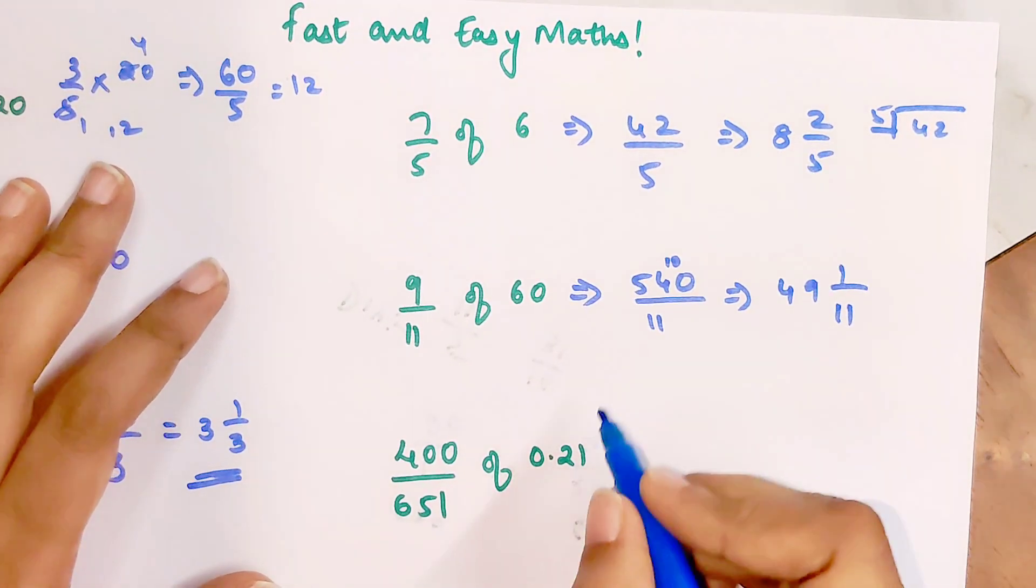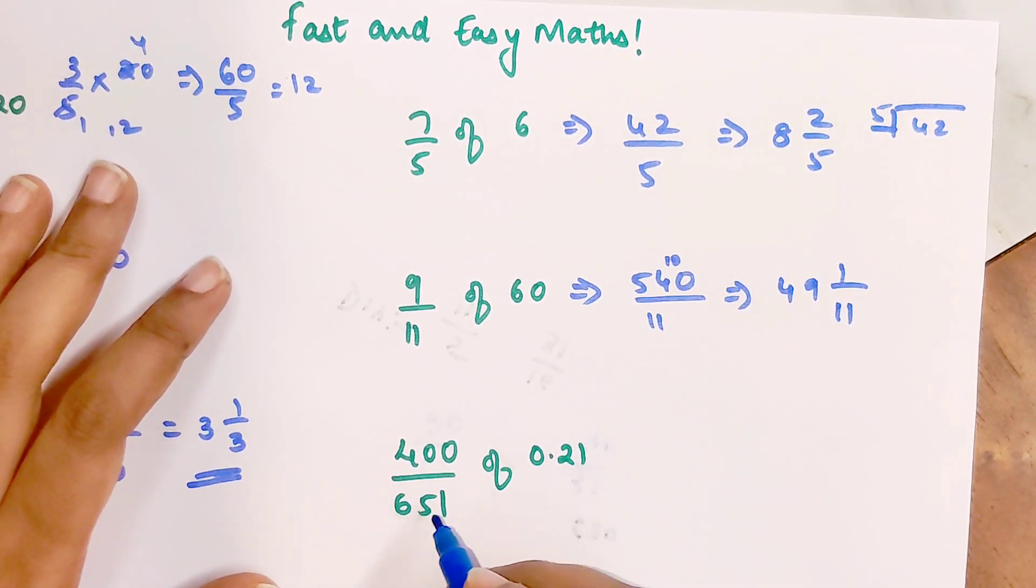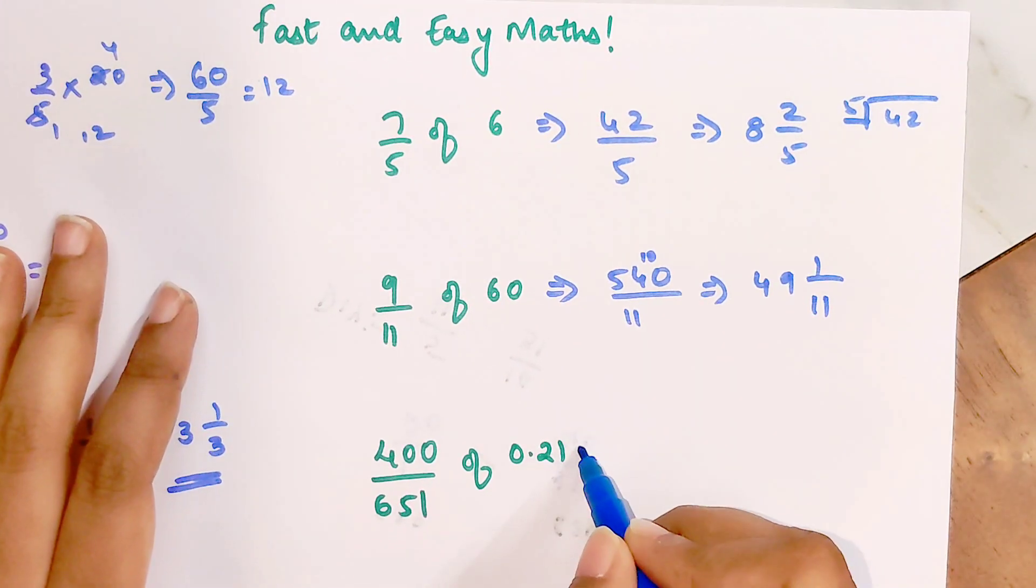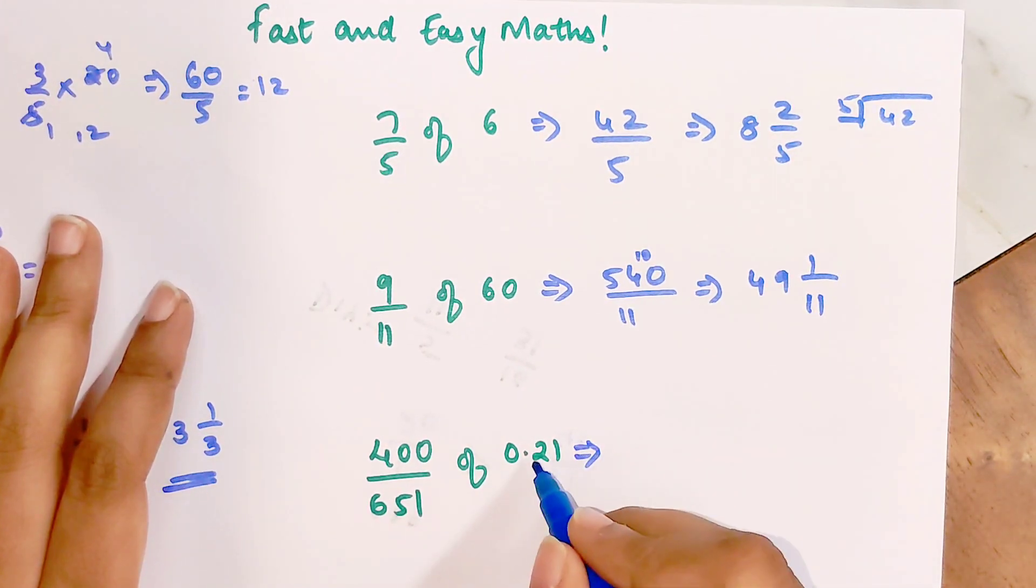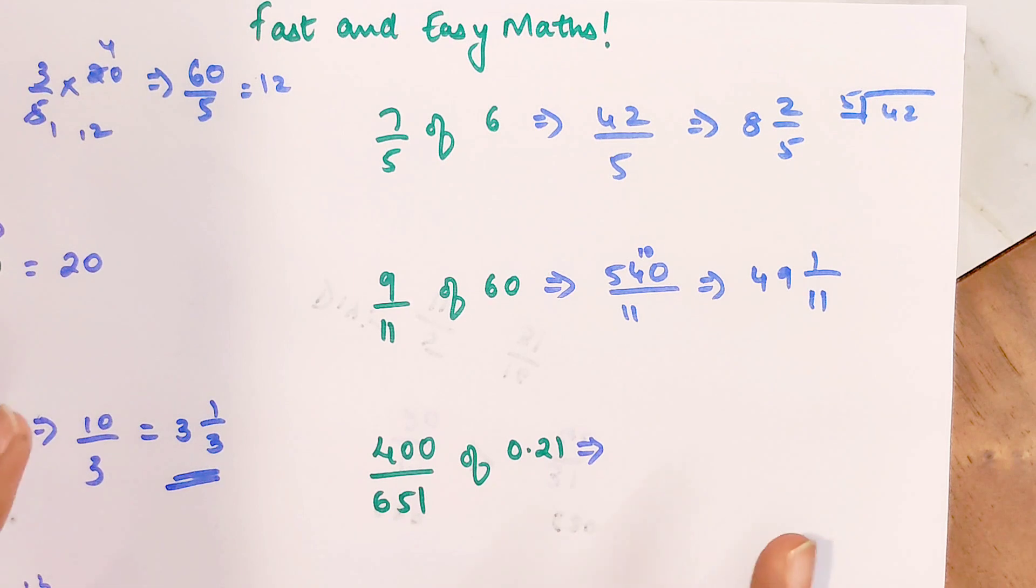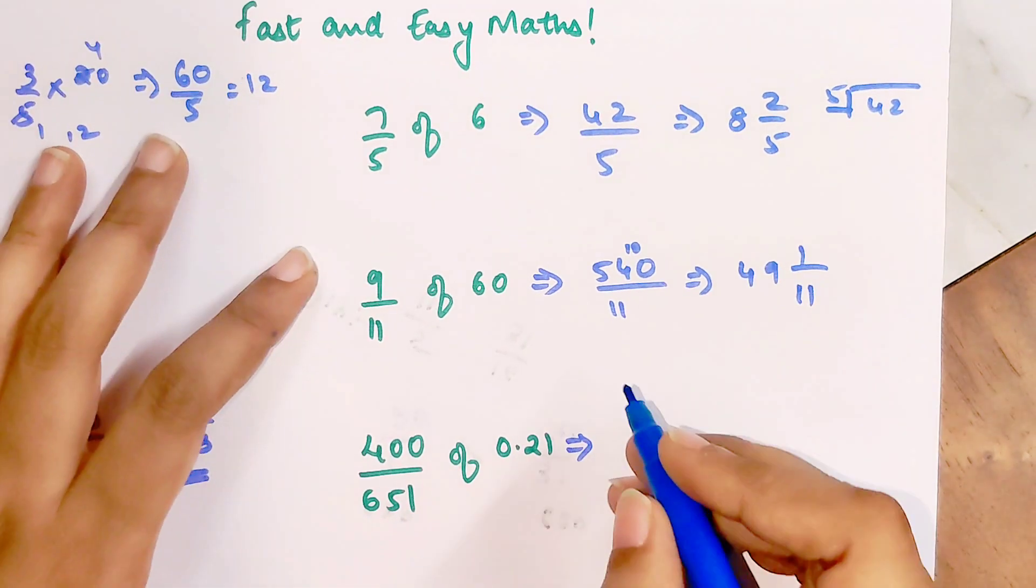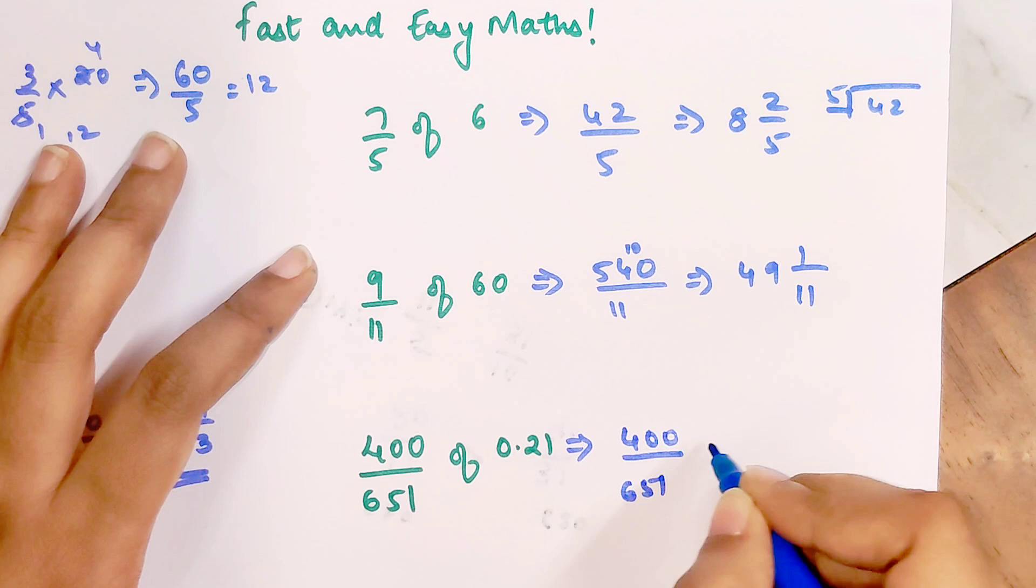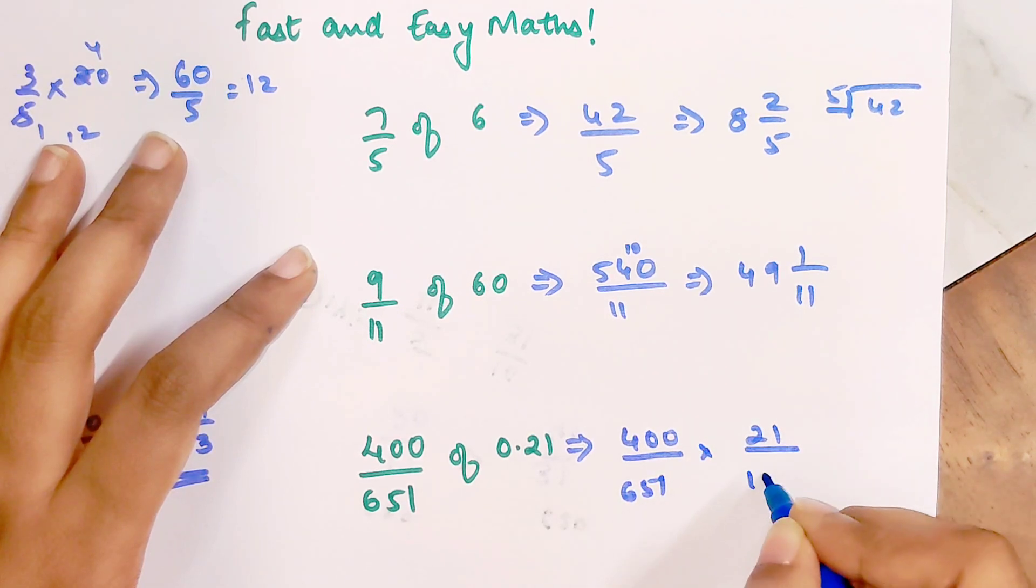Now coming over here, when you have something like this, it's quite tricky. I'm not saying it's super easy. What you do over here is, I would rather suggest that you always convert all these decimals into fractions because then there are things which can get cancelled.